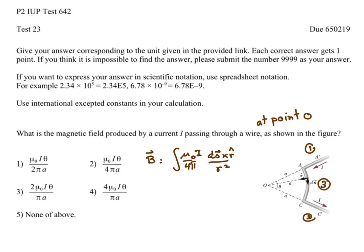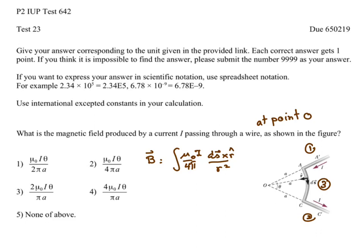Let's see a solution of test 23. The question is: what is the magnetic field produced by a current I passing through a wire at point O? To answer this, we can use the Biot-Savart law: B equals the integral of mu-zero I over four pi times ds cross r-hat over r squared, integrated along the wire.